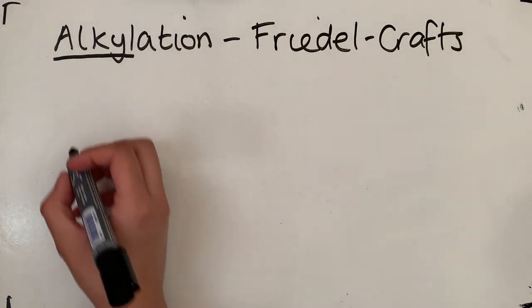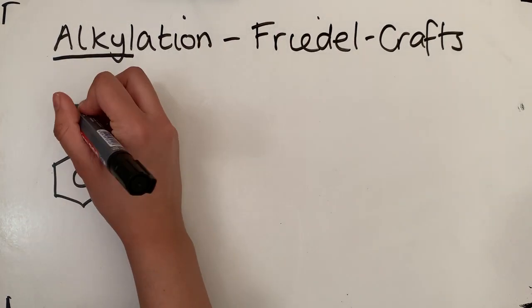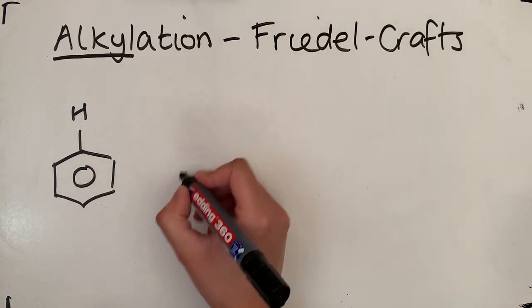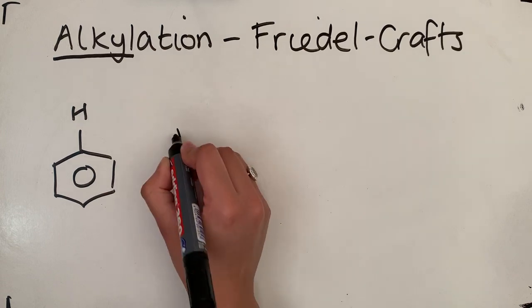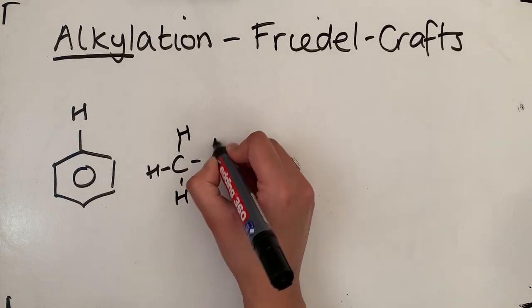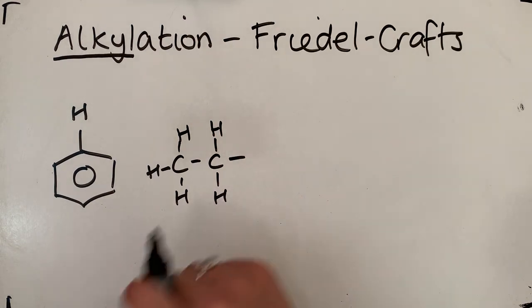So the overall reaction that we're going to do is our benzene ring. Now to add an alkyl chain, we have our alkyl chain. So I'm just going to go for an ethane chain. But you need to have it in the form of a haloalkane.